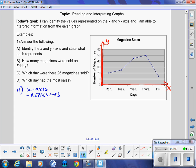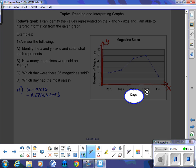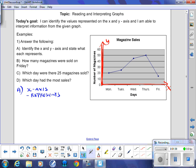For a graph, a proper graph, it's going to tell you, and it's always labeled at the bottom. So days. So it represents the days of the week. So it represents the days of the week.